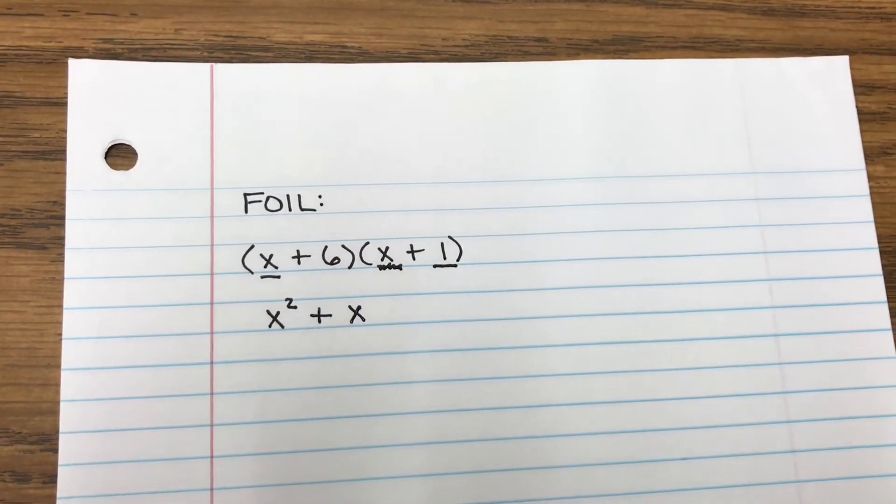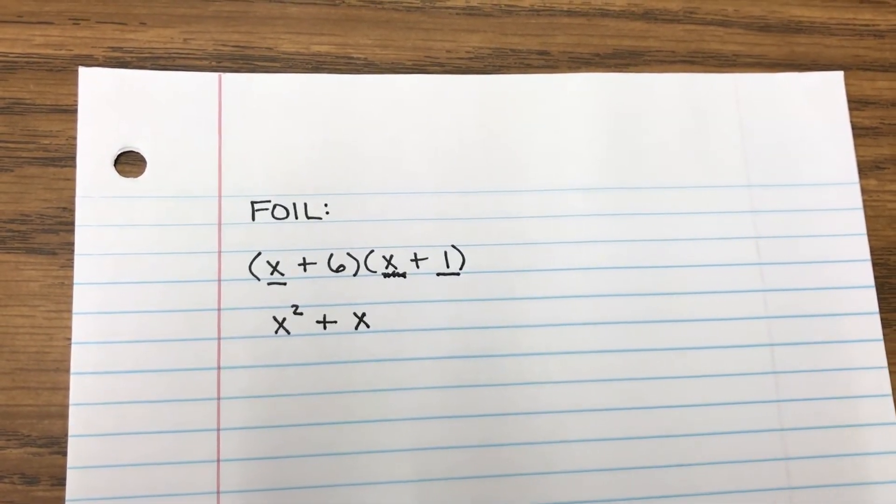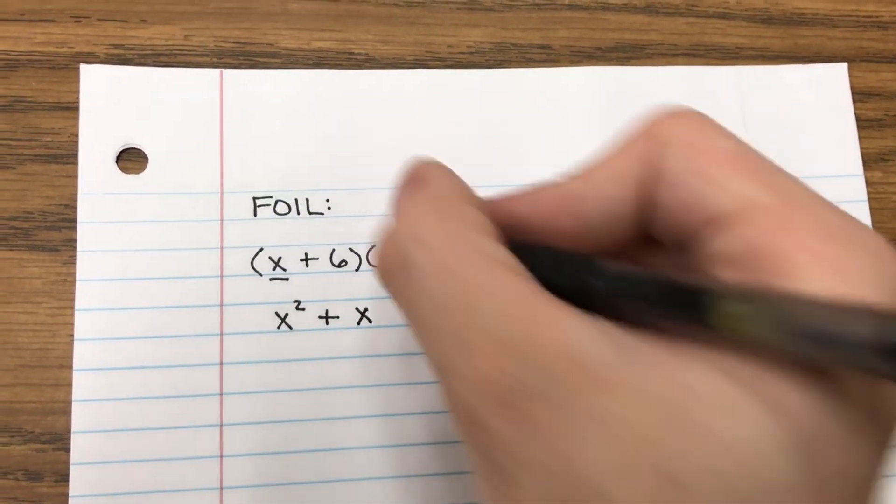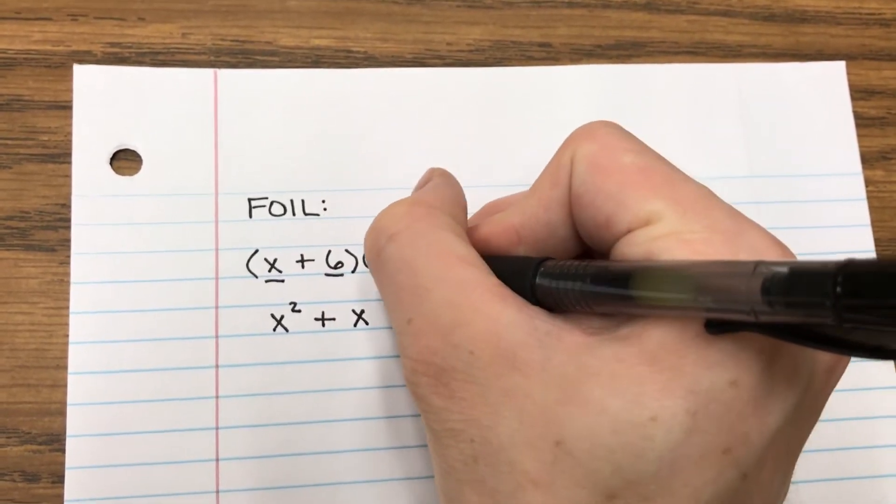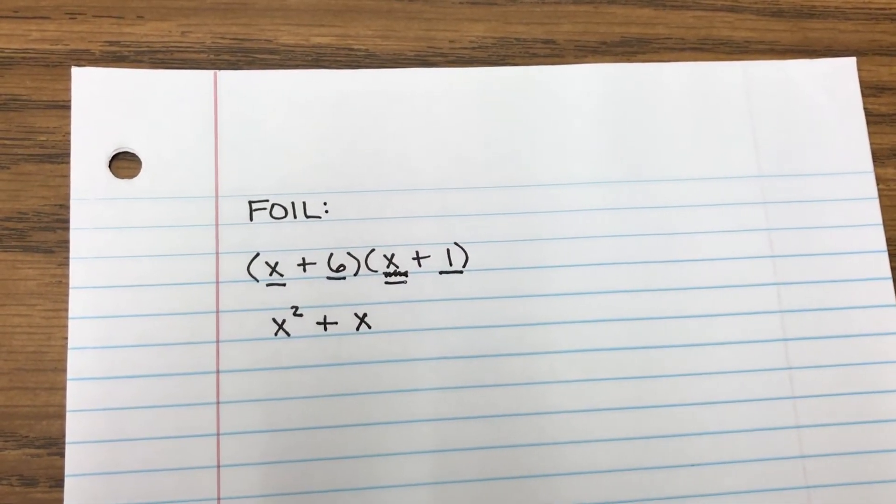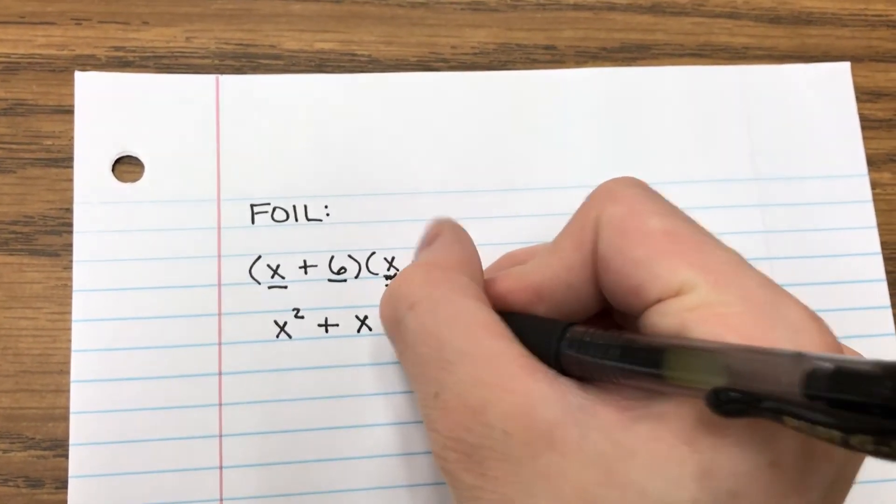Okay, the I stands for inner, so I'm going to underline the two that are inside, like this. 6 times X is 6X.